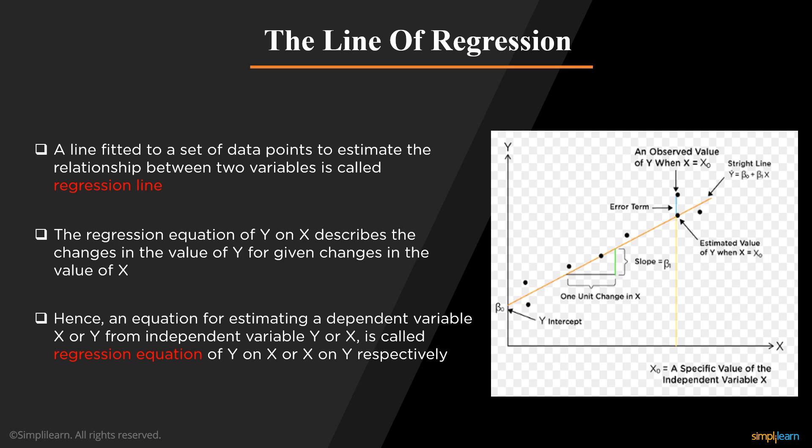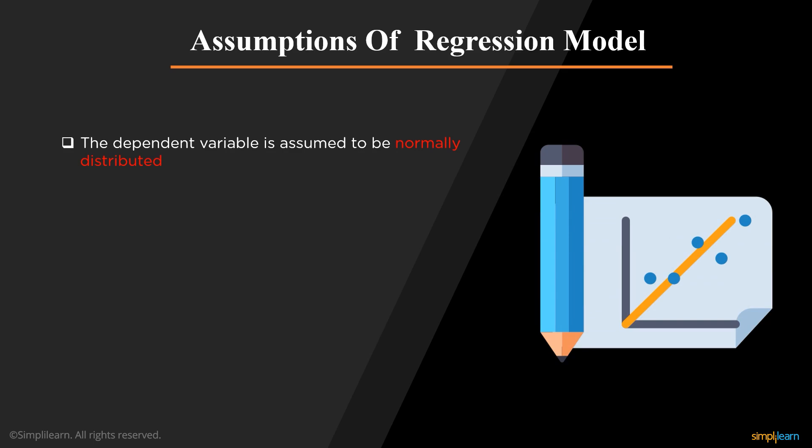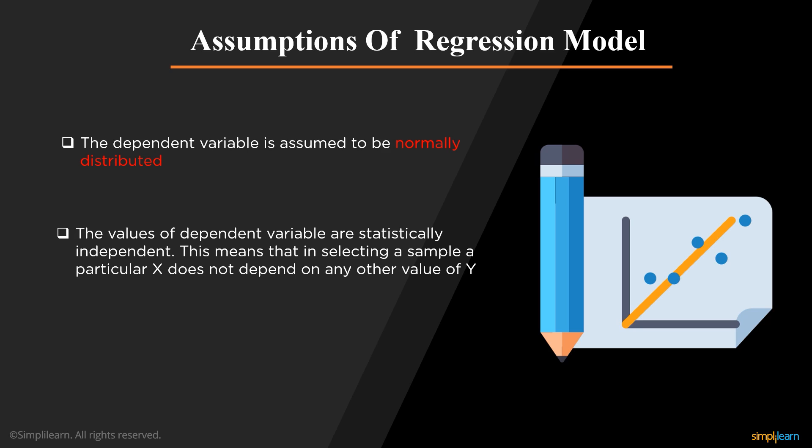Let's discuss the two key terms in this graph. The first one is slope. Slope is the ratio of the vertical and horizontal distances between the two points on a line. And you can see y-intercept which is the coordinate of the point at which the curve intersects an axis. There are some assumptions we take to create the regression model. The first one is the dependent variable is assumed to be normally distributed. The values of the dependent variable are statistically independent. This means that when we select the sample of a particular x, it does not depend on any other value of y. And the third one is error values are statistically independent.